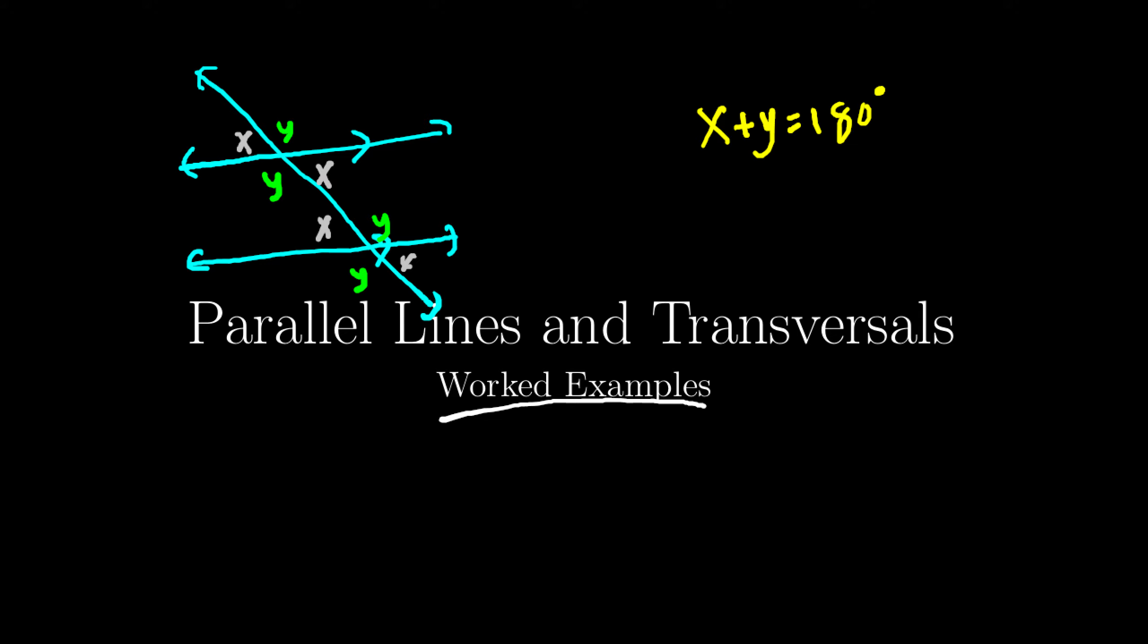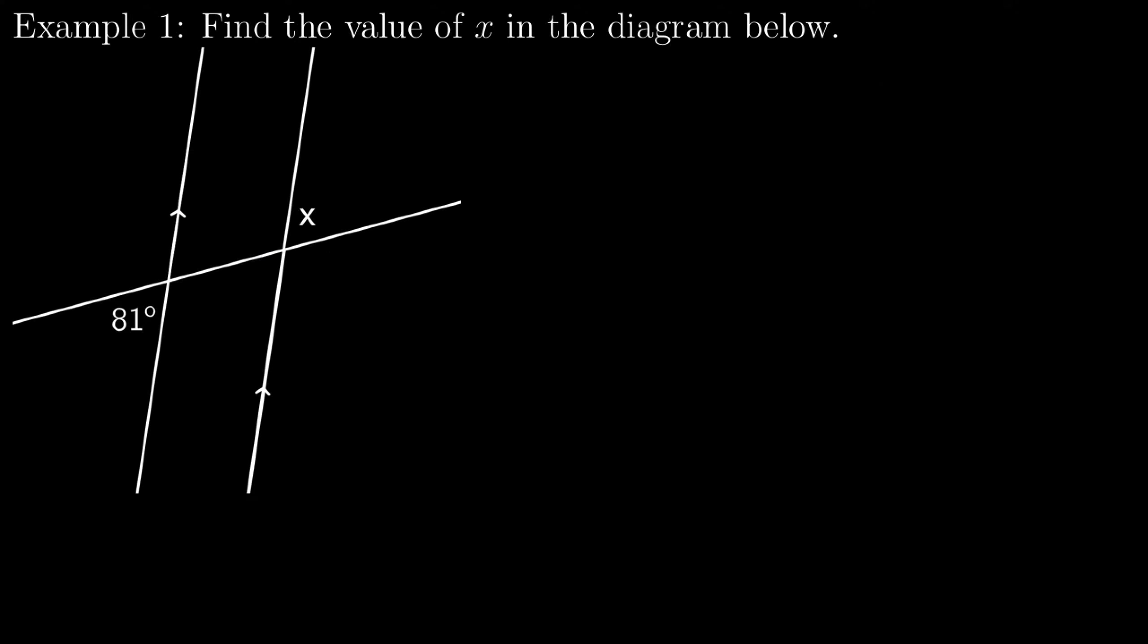So let's see six examples, make sure this makes sense. So here's the first one, I notice this angle here, that angle there. They both appear to be acute, that means I know they will be equal, so x will equal 81 degrees, and that's it.